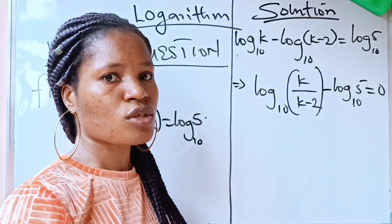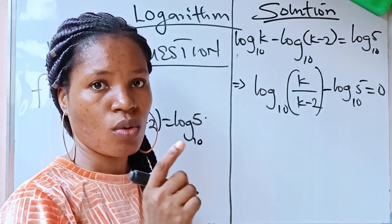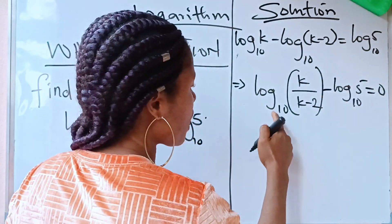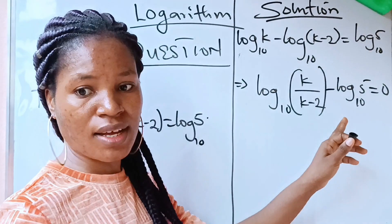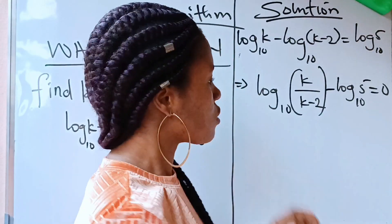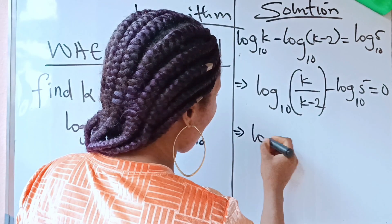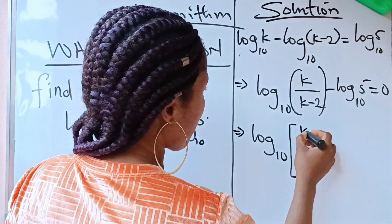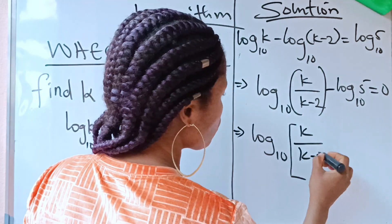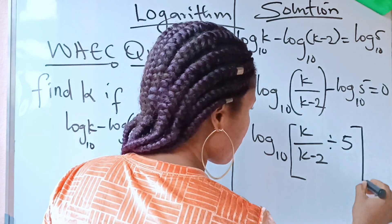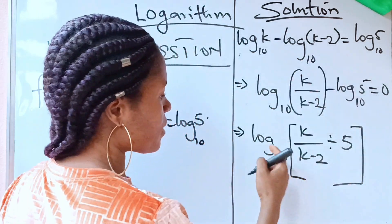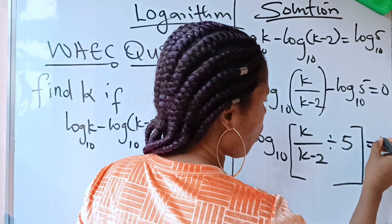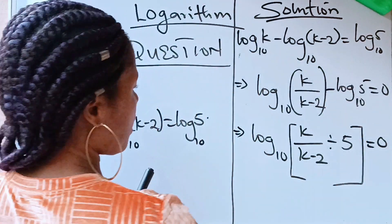Notice that these two terms are the same base and subtracting, so we can divide as well. We take one log to base 10 and open the bracket, giving us k over (k minus 2) divided by 5, using that same law. This equals zero.